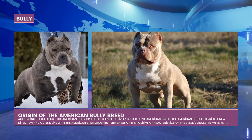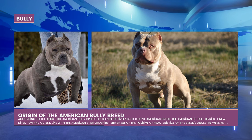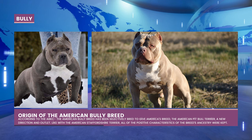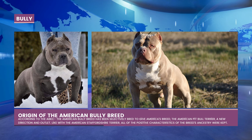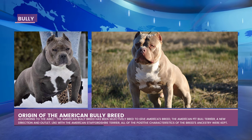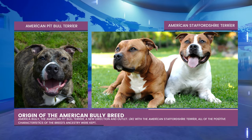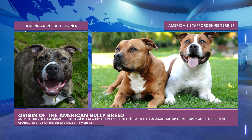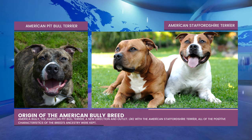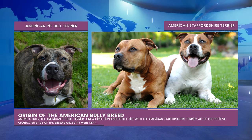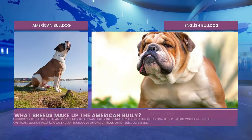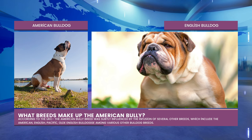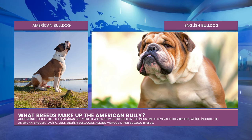The American Bully breed was acknowledged by the United Kennel Club in 2013. The main registries covered here are the ABKC, BBCR, BRC Global, and the UKC. According to the ABKC, the breed was selectively bred to provide the American Pit Bull Terrier with a new direction, preserving advantageous traits including loyalty and stability around people and kids, while breeding out dog and human aggression. A number of bulldog breeds, including American, English, and Old English Bulldogs, were also subtly incorporated.